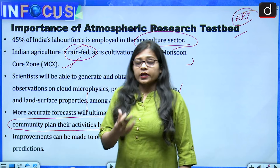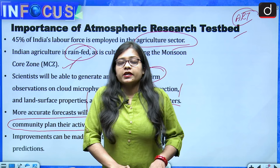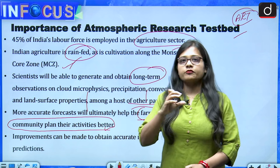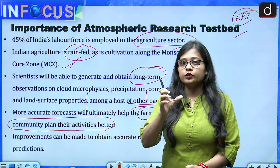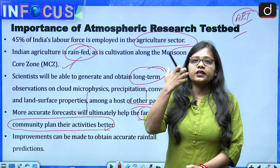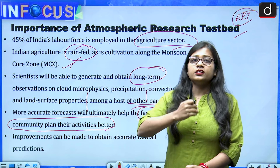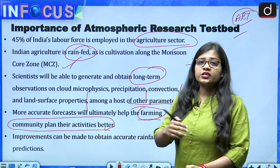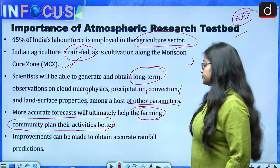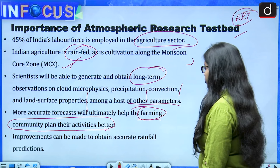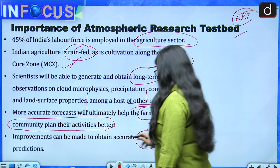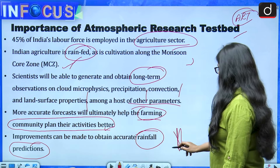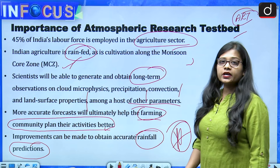If more accurate rainfall predictions are made, farmers can plan accordingly — saving time, energy, and resources — and potentially adopt alternative strategies as needed. Accurate rainfall prediction is ultimately the main goal of the Atmospheric Research Test Bed.